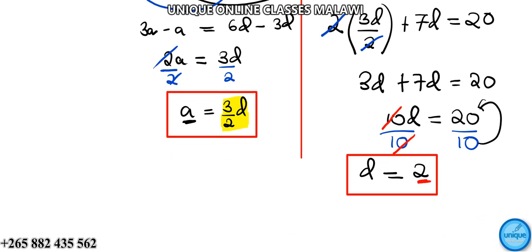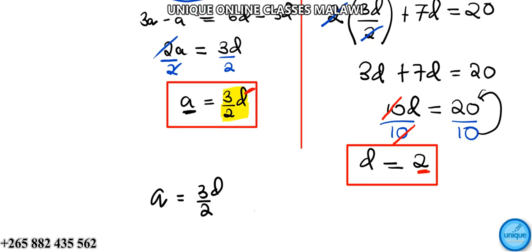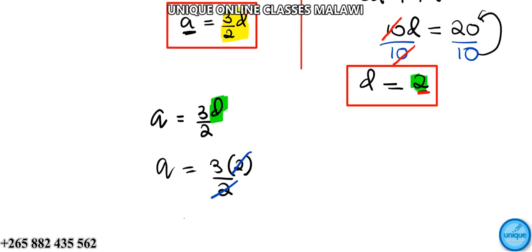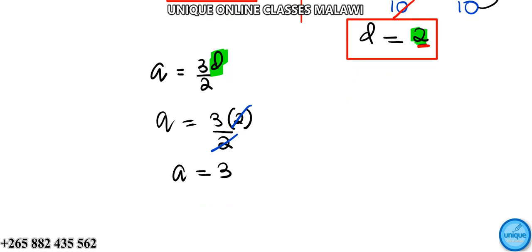Now that we have d equals 2, we can find 'a'. From equation one, 'a' equals 3d over 2. Substituting d equals 2: a equals 3 times 2 over 2, which is 6 over 2, giving us a equals 3. So the first term is 3 and the common difference is 2.